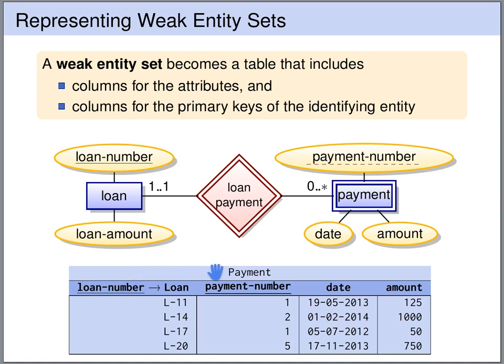And then we have columns for the attributes: payment number, date, and amount. The key of the payment table is the combination of the primary key of the identifying entity and the discriminator of the weak entity set. So in this case, the key of the payment table is the combination of loan number and payment number.